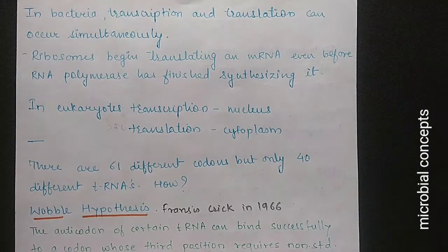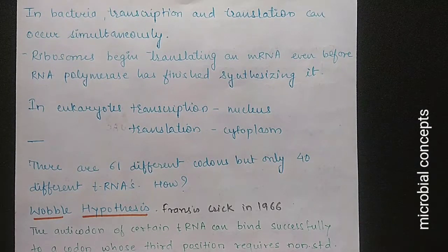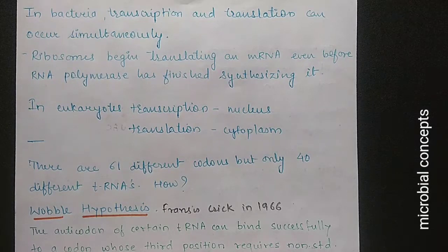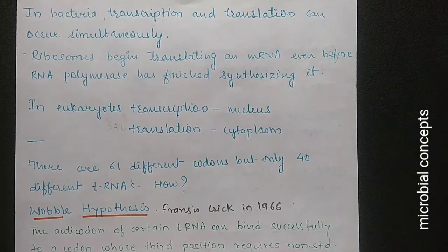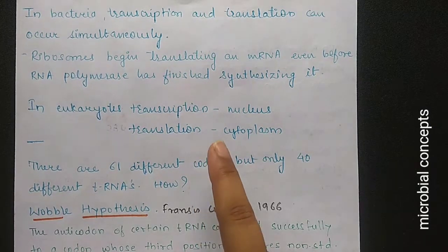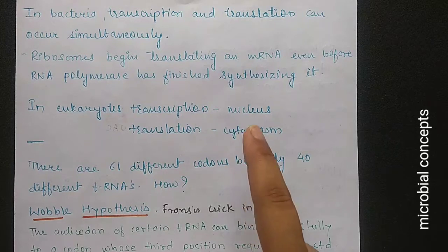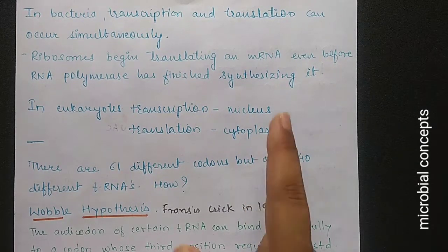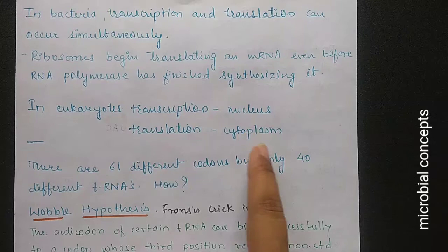In bacteria, transcription and translation can occur simultaneously — ribosomes begin to translate mRNA even before RNA polymerase has finished synthesizing it. In eukaryotes, transcription takes place in the nucleus while translation takes place in the cytoplasm, so these two processes are separated.